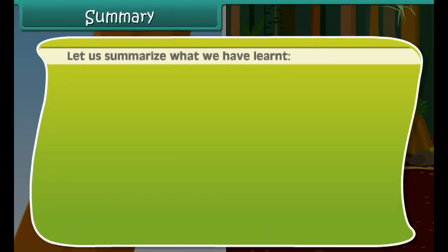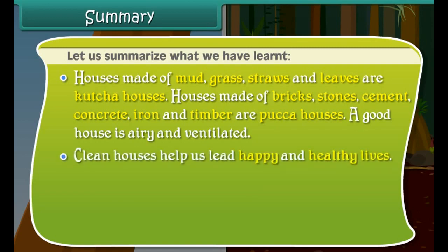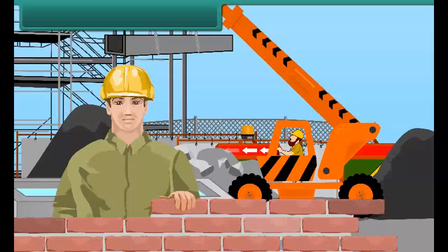Let us summarize what we have learned. Houses made of mud, grass, straws, and leaves are kacha houses. Houses made of bricks, stones, cement, concrete, iron, and timber are pakka houses. A good house is airy and ventilated. Clean houses help us lead happy and healthy lives. Some other forms of shelter are houseboats, igloos, and caravans. Animals also live in shelters such as kennels, stables, sheds, dens, etc.